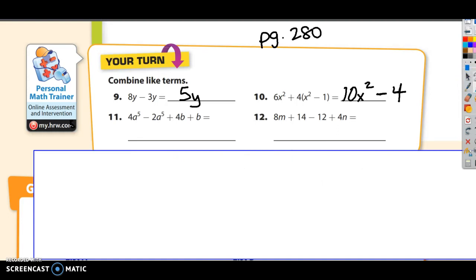Let's go through number 11 and identify the like terms. We've got an a to the 5th and an a to the 5th, which means I can combine those. I've got 4 minus 2. Well, that's simple. 4 minus 2 is 2. 2 what? It's 2 a to the 5ths.